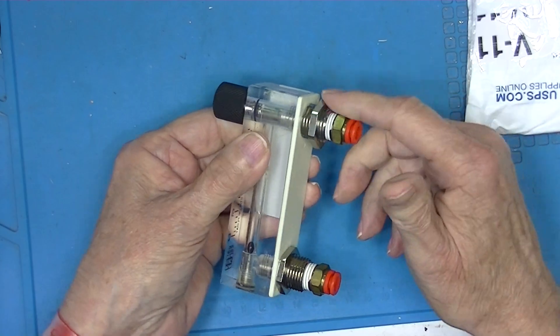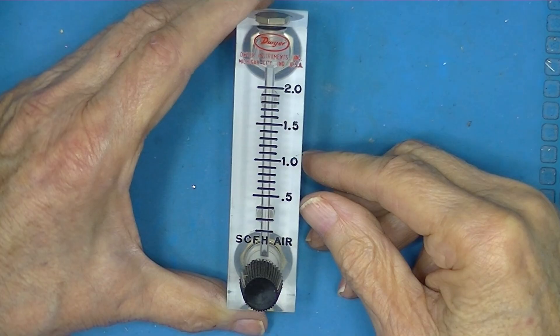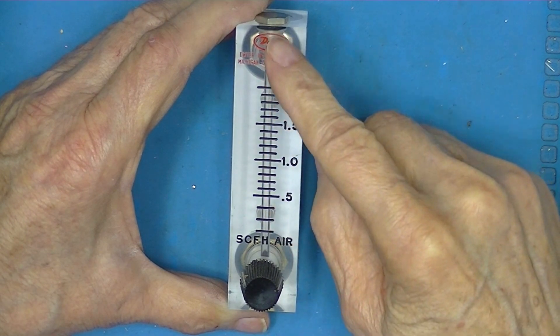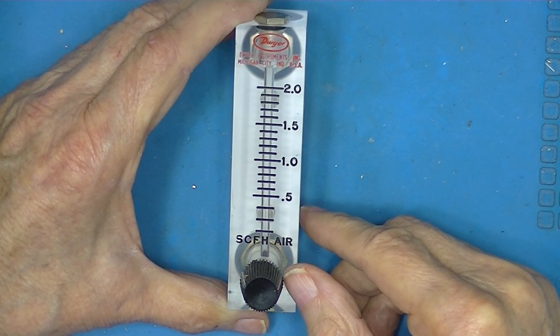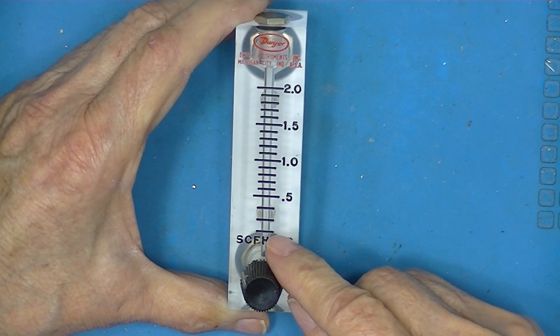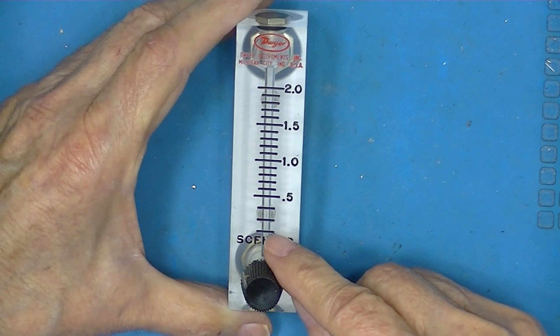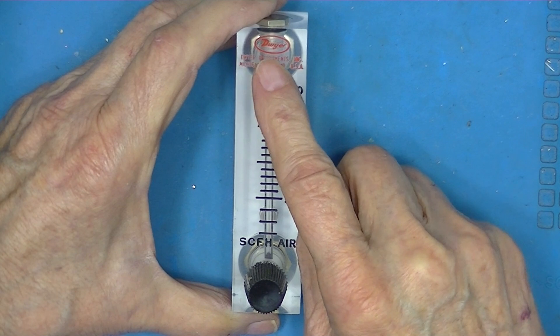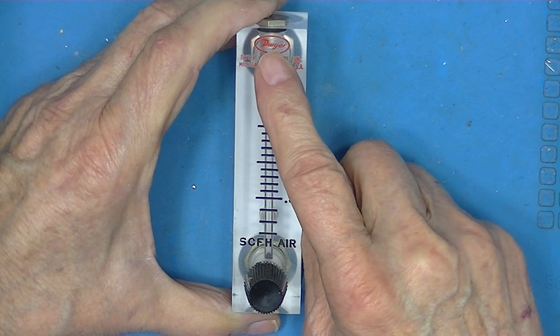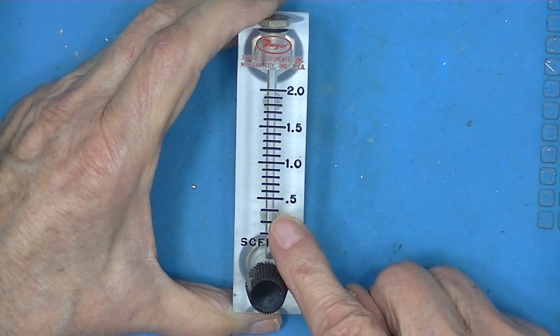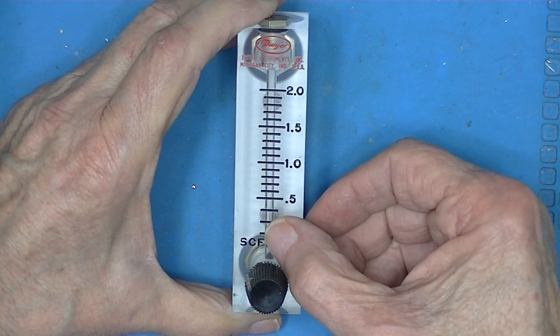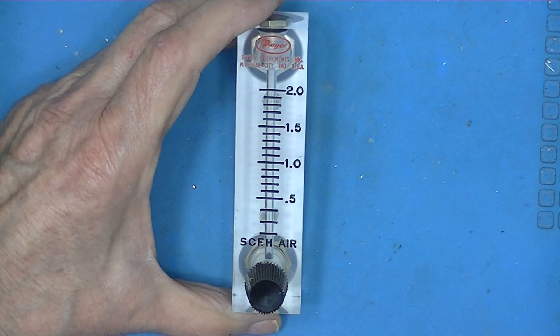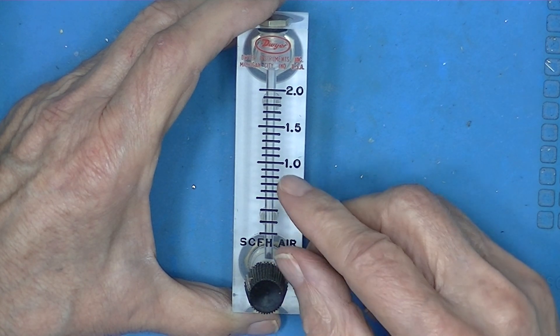Secured to the panel with these two nuts, I thought I'd do a video of this device here. This device is trademarked as a rotameter, although the trademark does not belong to Dwyer. The trademark itself belongs to a European company, but the industry seems to have settled on rotameter.